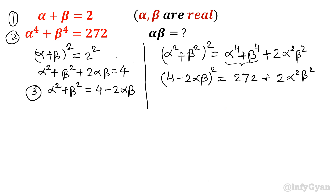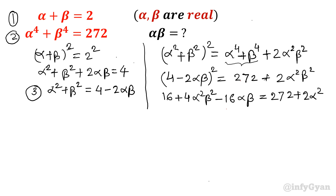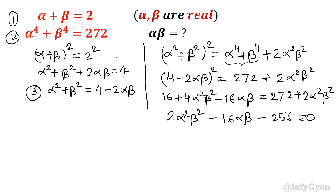Let's expand the whole square: 4 squared is 16, plus 4 alpha square beta square, minus 16 alpha beta, equals 272 plus 2 alpha square beta square. Taking all terms to the left side and simplifying: 2 alpha square beta square minus 16 alpha beta plus 16 minus 272 equals 0, which gives 2 alpha square beta square minus 16 alpha beta minus 256 equals 0. Dividing by 2: alpha square beta square minus 8 alpha beta minus 128 equals 0.